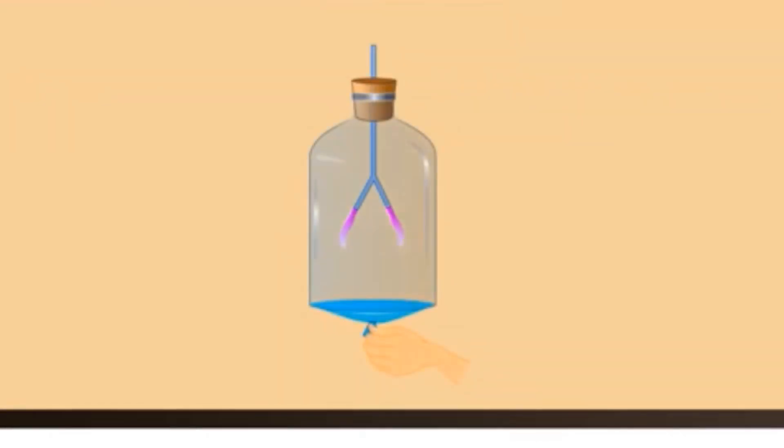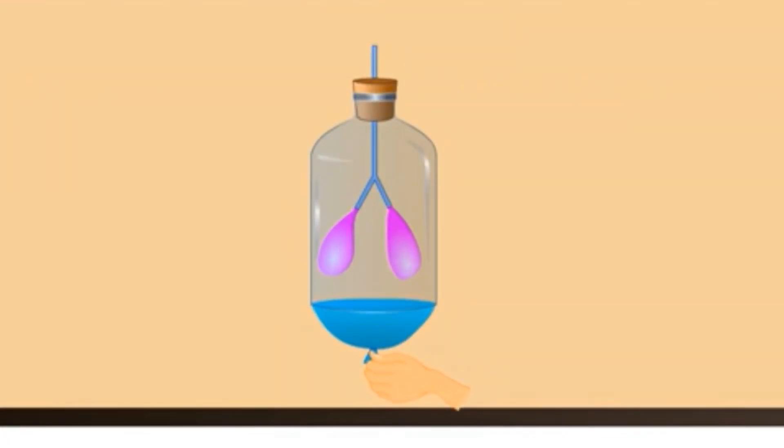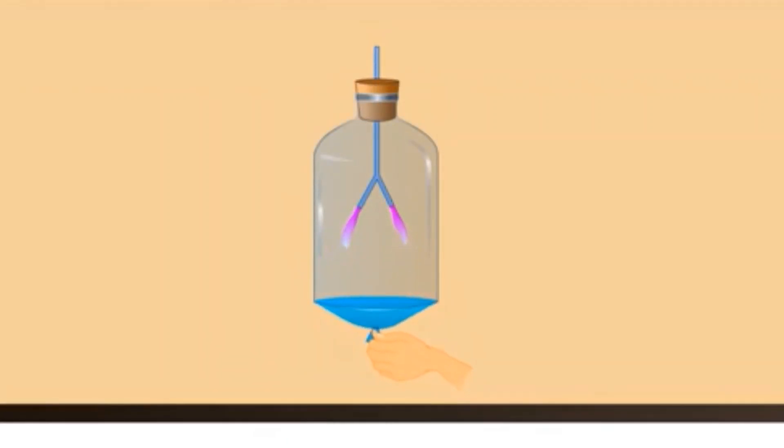Pull down the rubber sheet or the large balloon at the bottom and watch the balloons inside get inflated. Now, push back the rubber sheet inside the bottle and watch the balloons collapse.